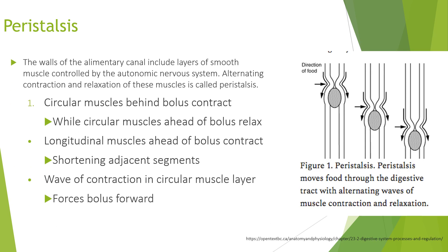The walls of the alimentary canal include layers of smooth muscle controlled by the autonomic nervous system. Alternating contraction and relaxation of these muscles is known as peristalsis. The circular muscles behind the bolus contract while those ahead relax; the longitudinal muscles ahead of the bolus contract, shortening adjacent segments, and a wave of contraction in the circular muscle layer forces the bolus forward.